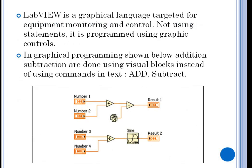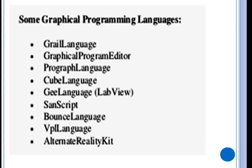One example of a graphical language is LabVIEW, and this graphical language is targeted for equipment monitoring and control. There are no written statements - as you can see over here we have some blocks, and we are not writing anything, just connecting number one and number two to the addition block. This addition block performs the operation and gives the result to the output. There is also subtraction, division, and creating a sine wave shown in the blocks. Other graphical programming languages include G language, Bounce language, and Alternate Reality language, but the most frequently used is LabVIEW.